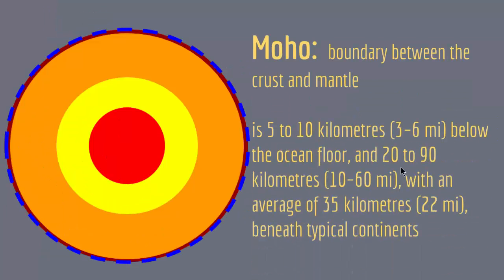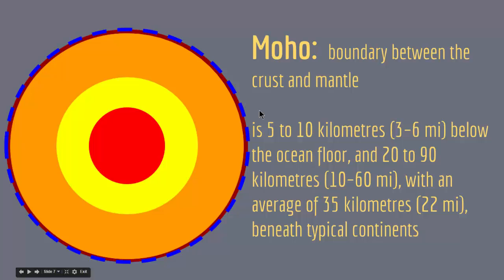After the crust, we have a region called the Moho, which is the boundary between the crust and the mantle. It's about 5 to 10 kilometers thick below the oceanic floor, and 20 to 90 kilometers with an average of 35 kilometers beneath the typical continents. Moho has some distinct physical properties that make it a clear boundary between the crust and the mantle.